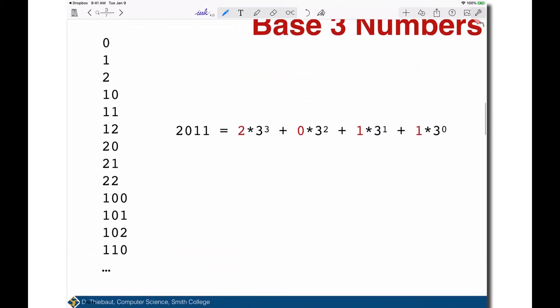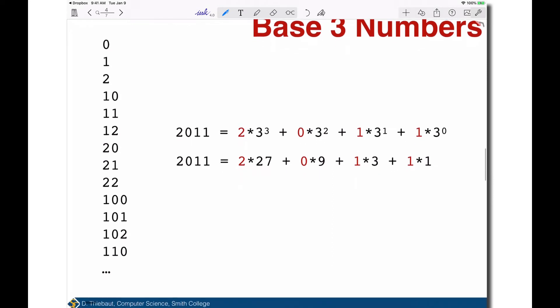Now let's say I have the number 2011 in base 3. What is its value in decimal? 2011₃ would be 2×3³ + 0×3² + 1×3¹ + 1×3⁰. I can put an indexing system on top of the digits to show the powers of 3 that I need to use. Expanding that: